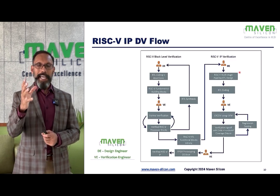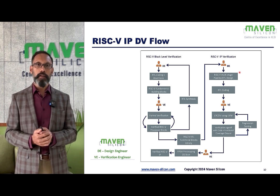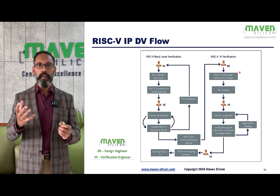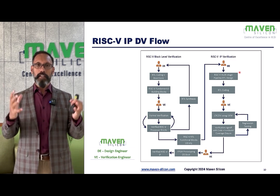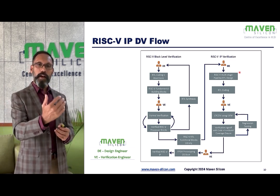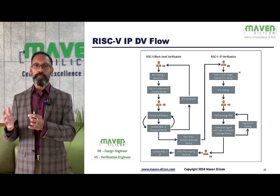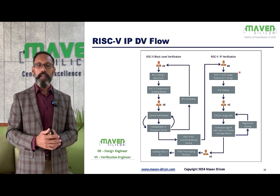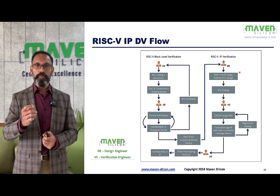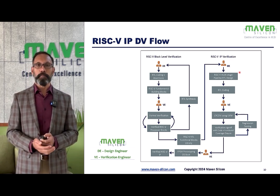We also explain the recommended DV flow — how to use formal verification at the block level, how to create a pre-verified design library, and using that library how to design various kinds of processors like three-stage, five-stage, or any multi-stage processor. When verifying the IP, we show how to use UVM efficiently and also when to use FPGA prototyping boards — for example, to verify the OS booting process.